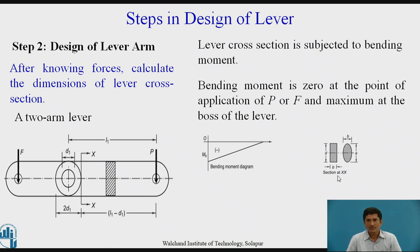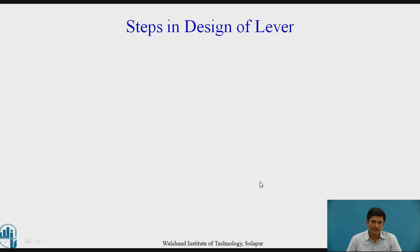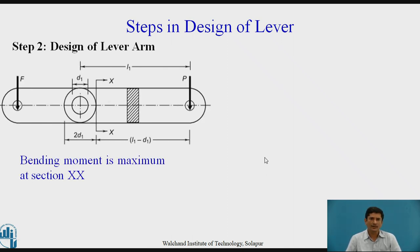The lever cross section can be either rectangular or elliptical. Accordingly, we need to select the equations for section modulus. In this lever, bending moment is maximum at the section XX which is given by MB equals P times (L1 minus D) because total outside diameter of the boss is 2D. L1 minus D is the moment arm.